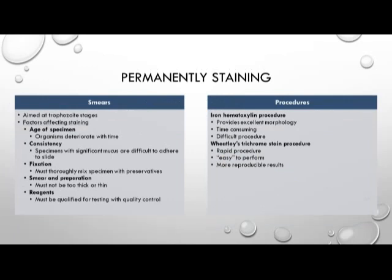The goal of permanent staining is aimed at trophozoite stages. Factors that could affect permanent staining include the age of the specimen as organisms deteriorate over time, consistency, fixation — the specimen must be mixed thoroughly with the preservative — and the smear preparation, which must have the right thickness. Reagents must be qualified by performing QC procedures based on your facility. The iron hematoxylin procedure provides excellent morphology but is time-consuming and difficult to produce. Alternatively, the Wheatley's trichrome stain is rapid, easy to perform, and more reproducible.